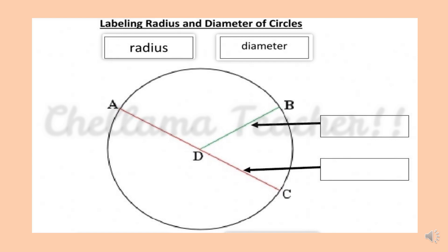Here, the green line segment B is the radius. And the line segment AC passes through the center D — that is the diameter.